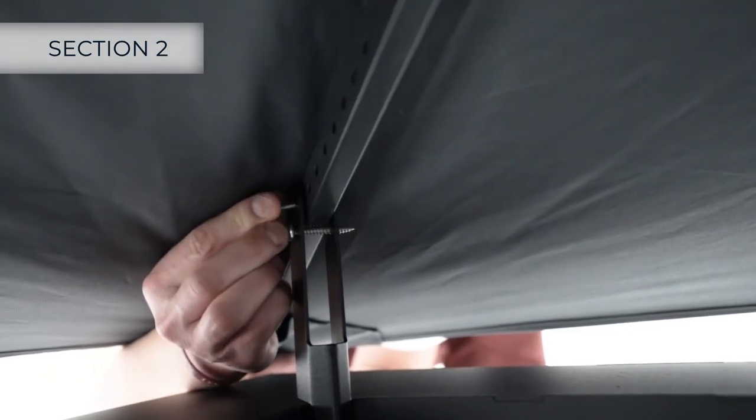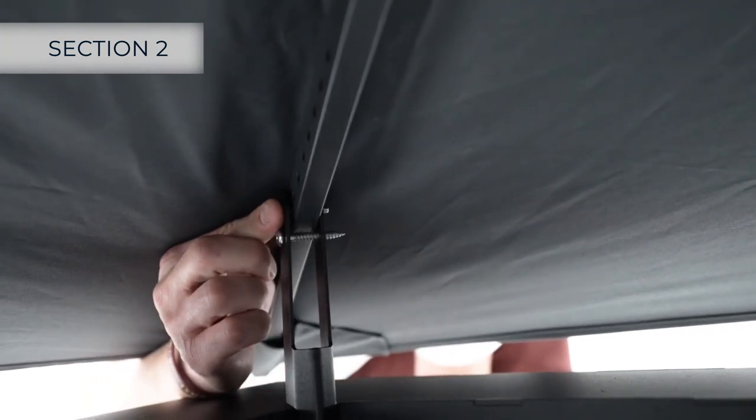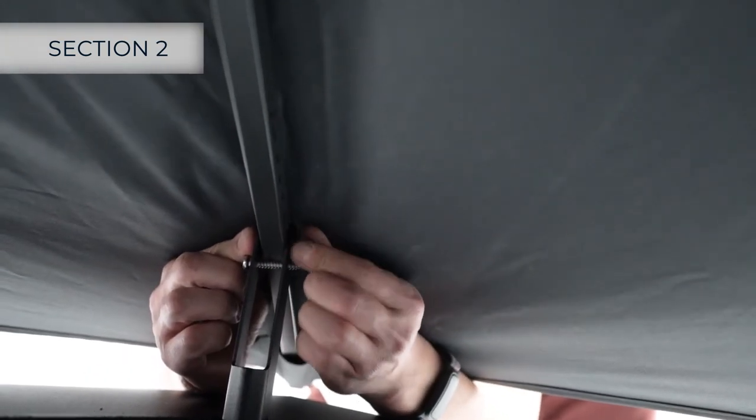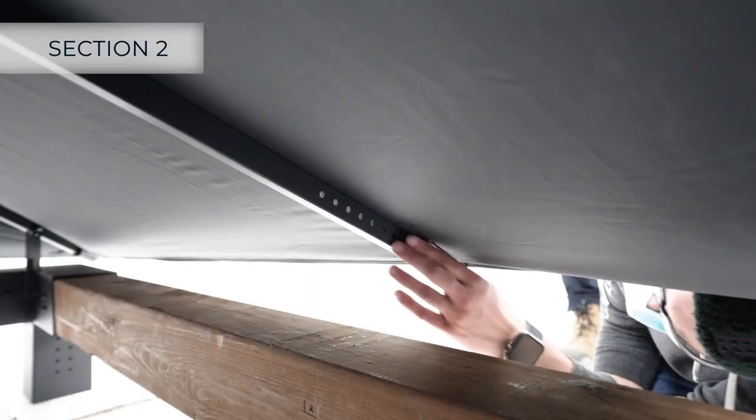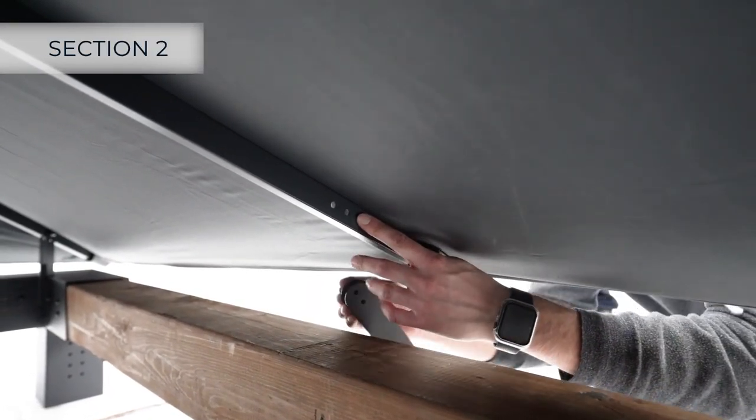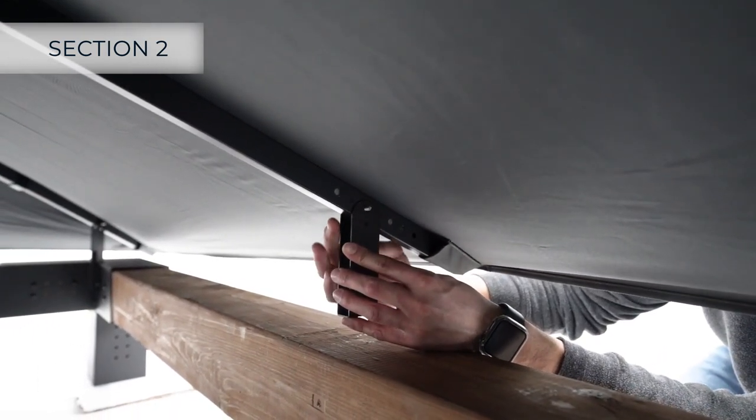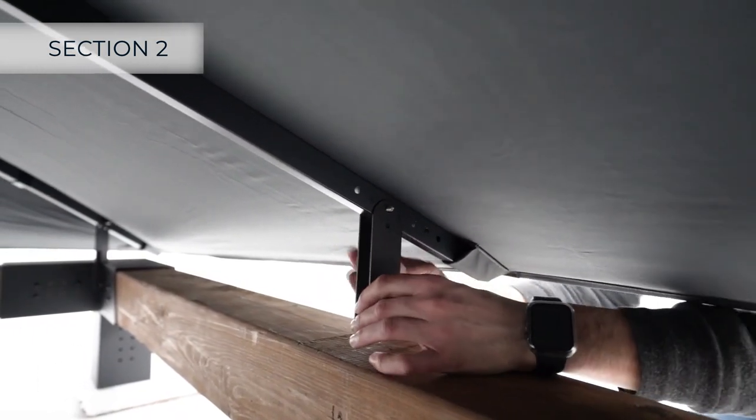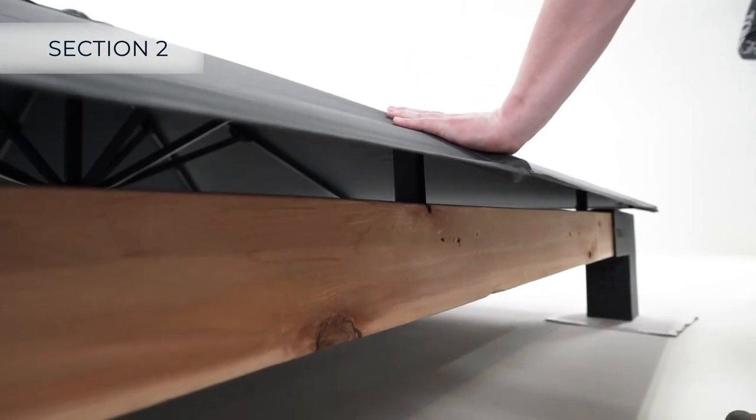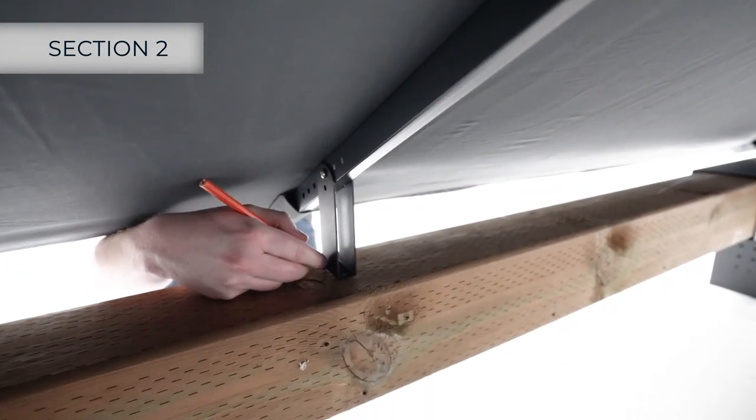Use the provided hardware to fasten the umbrella top using the top hole on the corner brackets. For the middle brackets, spaced according to your preference, attach the bracket temporarily, apply pressure from the top so the bracket makes contact with the lumber, and mark its position.